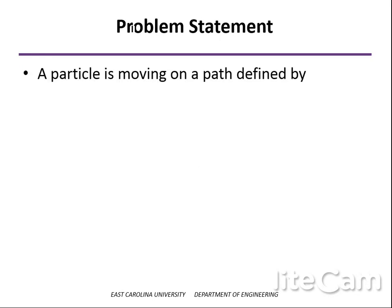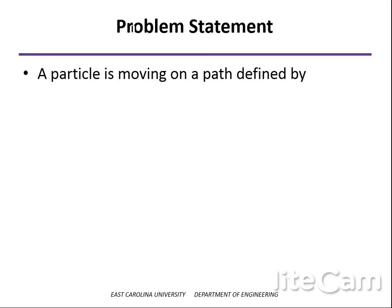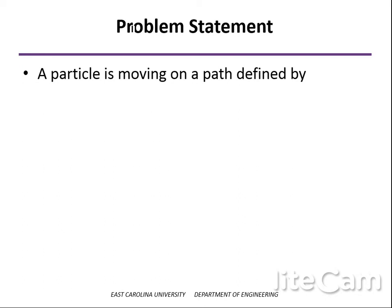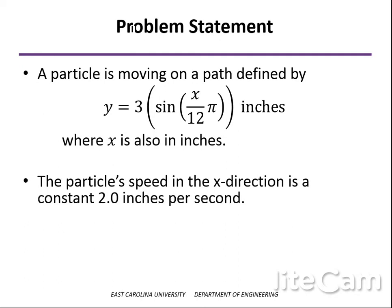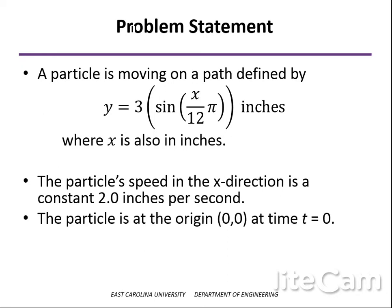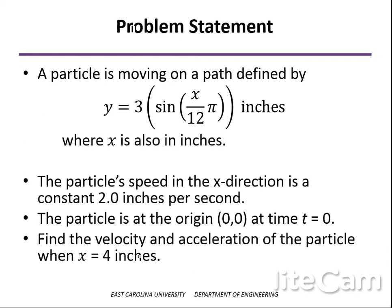The problem statement is very similar to some of the problems you've seen in the textbook. We're told that the particle is following a path defined by the function y as a function of x. We're also told that the particle's speed in the x direction is constant at 2 inches per second. It starts at the origin at time equals zero, and we want to find the velocity and acceleration after the particle has moved 4 inches in the x direction.